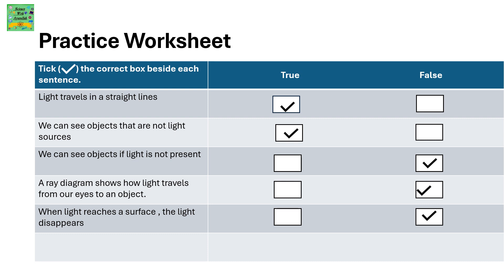It shows how the light travels from the object to our eyes. When light reaches a surface, the light disappears. It's false. When light reaches a surface, it reflects back.